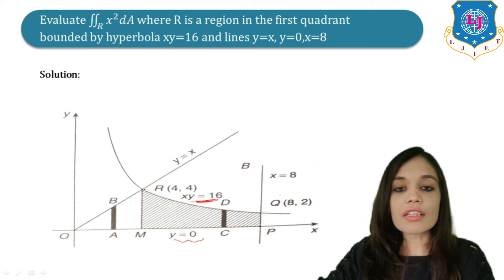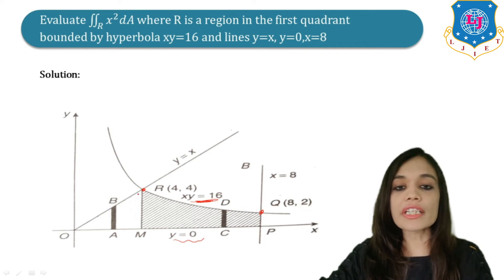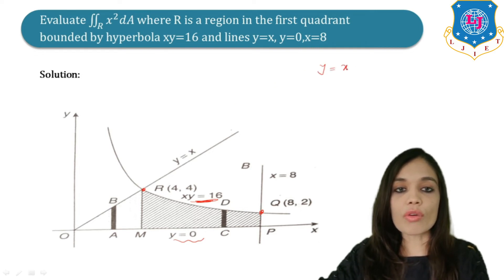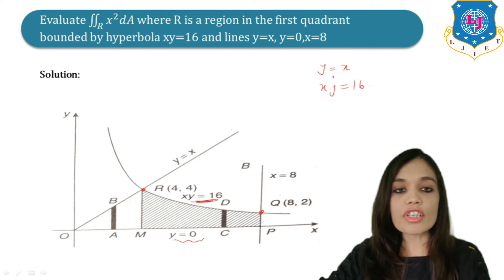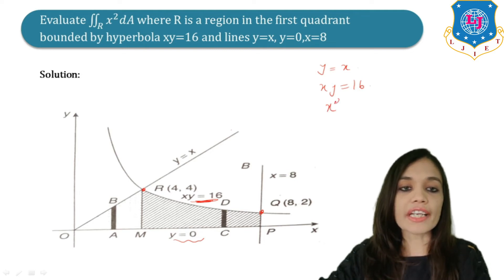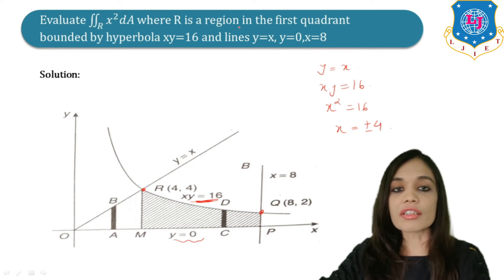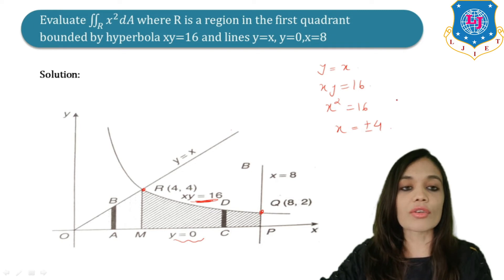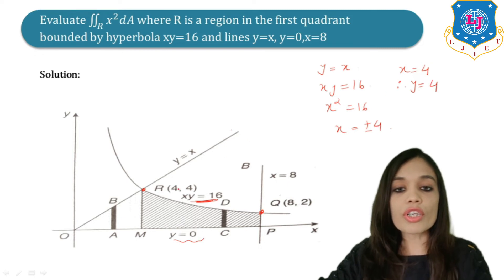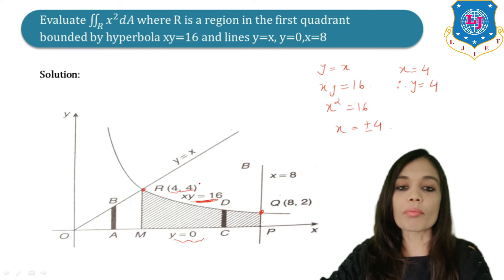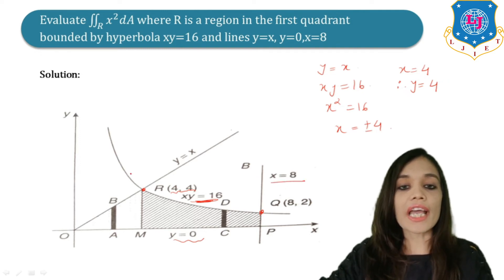These curves are intersecting at two points. We need to find the intersection of the line y = x and the hyperbola xy = 16. Substituting y = x, we get x² = 16, so x = ±4. Since the region is in the first quadrant, we take x = 4, therefore y = 4 as well. So the point of intersection is (4, 4).